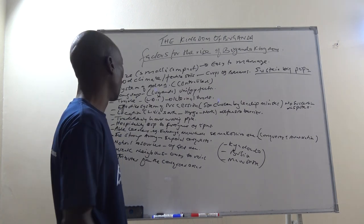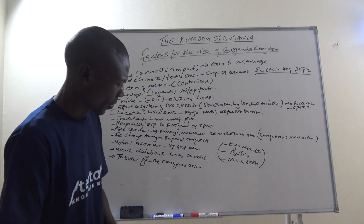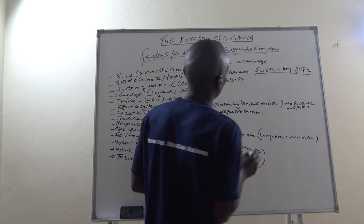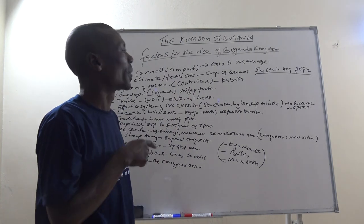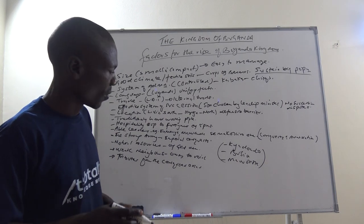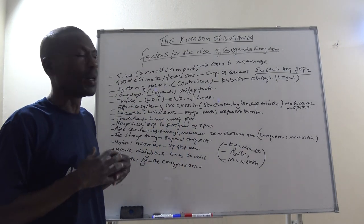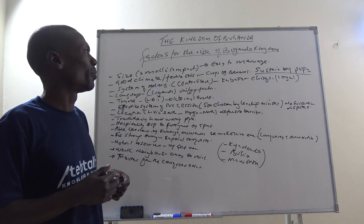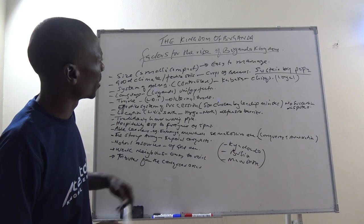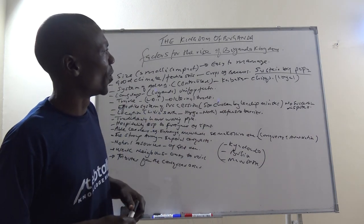The system of administration was also another factor for the rise. It was a centralised administration — all powers were vested in the Kabaka, from the top to the bottom. He controlled his chiefs, and the chiefs were loyal and obedient to the Kabaka. Because of this centralisation of power, there was no problem internally within the kingdom, and it was able to manage effectively.